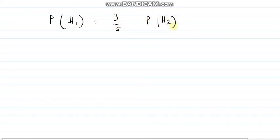Everyone, as I promised, I am going to make one more video on multiplication rule of probability. So here is this: the probability of hitting a target at first, second, and third shots are — probability of hitting in the first shot is 3/5, in the second shot is 2/5, and in the third shot is 3/4.